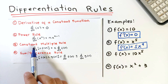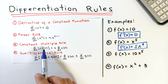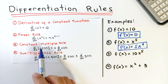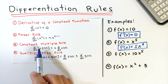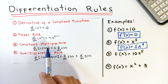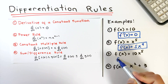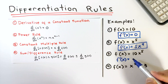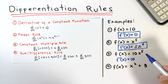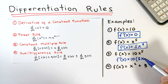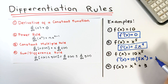Next, the constant multiple rule. The derivative of a constant c times f(x) is equal to the constant times the derivative of the function. Basically, you take out the constant c and then differentiate the function. For example, f(x) = 10 times x raised to 5. Its derivative f'(x) is simply copy 10, then using the power rule, bring down 5 as a coefficient, copy the variable, and subtract 1 from the exponent. So 5 times 10 is 50, giving us 50x raised to 4.